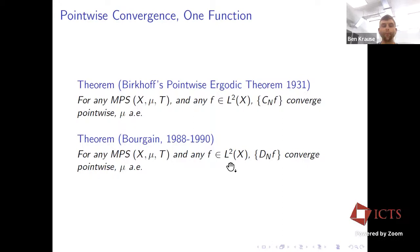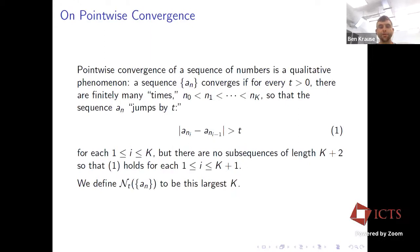I'll talk about how Bourgain proved these results. The first thing I need to do is quantify pointwise convergence. I'm going to switch perspectives and view pointwise convergence from a quantitative standpoint. This is strange because we think about pointwise convergence as qualitative — there's no universal rate. But we can quantify it using jump-counting data.